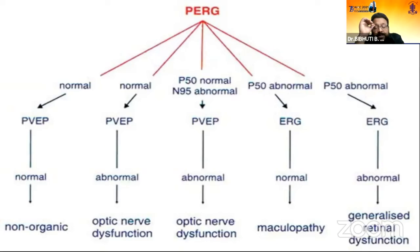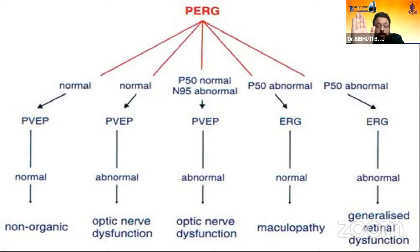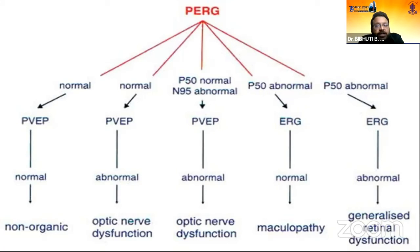Pattern ERG is always interpreted in combination with other electrophysiological tests like VEP. If pattern ERG is normal and VEP is normal, you are looking at non-organic visual loss. If pattern ERG is normal but VEP is abnormal, that indicates optic nerve dysfunction. If P50 is normal but N95 is abnormal along with an abnormal VEP, it is clearly optic nerve dysfunction. If P50 is abnormal, examine the full-field ERG — if ERG is normal, the pathology is localized to the macula; if ERG is also abnormal, there is generalized retinal dysfunction.